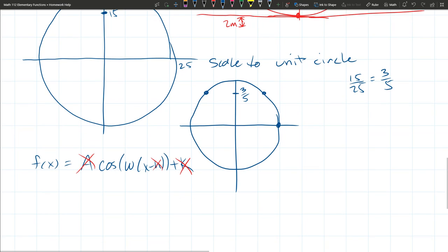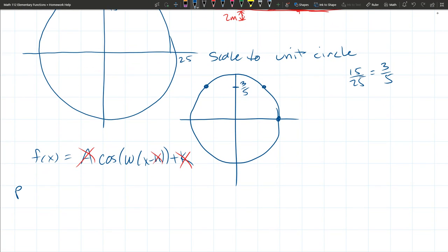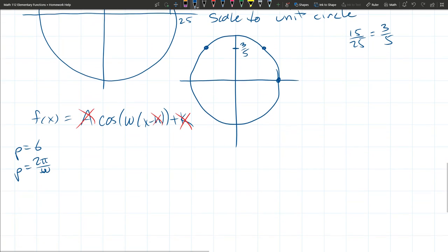P equals six, and of course do not forget the period is 2π over w, so what we're going to do is solve for w.